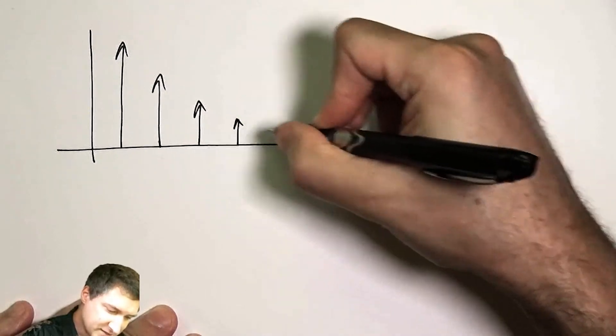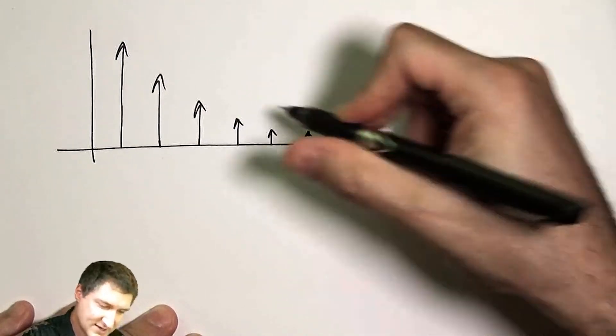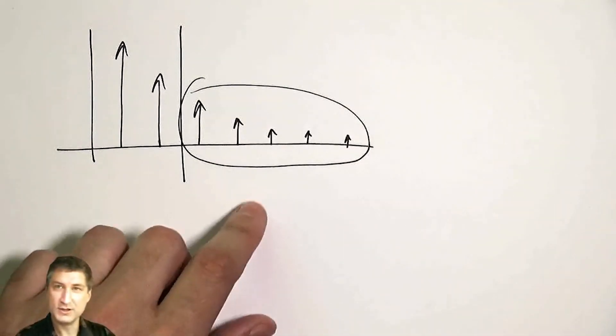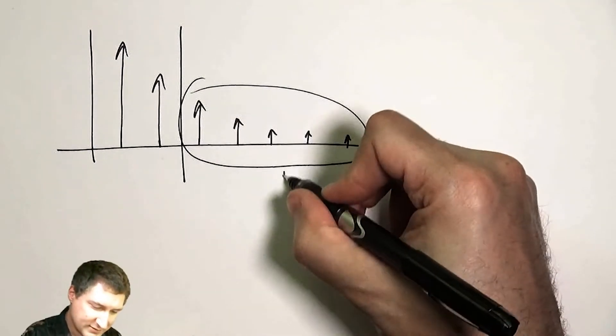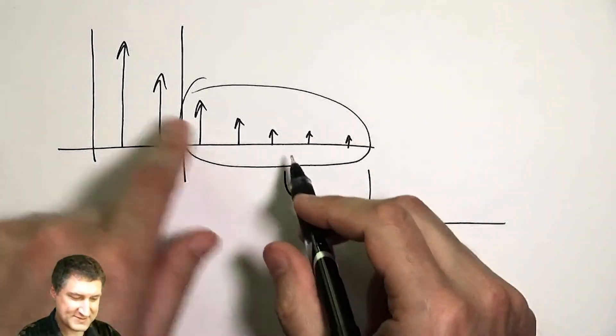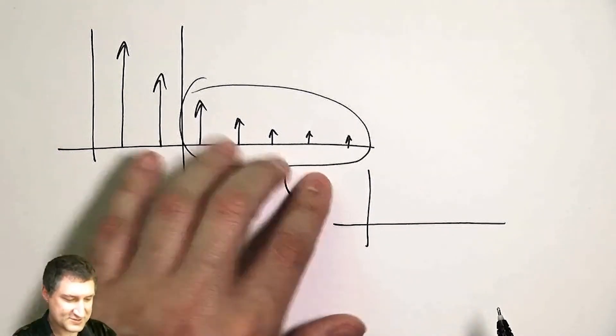remember that a conditional PMF is kind of like saying, I've got this, I'm chopping it off here, and I'm renormalizing it to just this area. Well, this area here has the same, you know, it's kind of self similar, right? This looks the same as this.